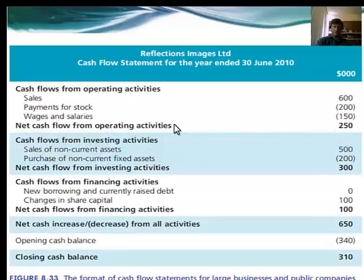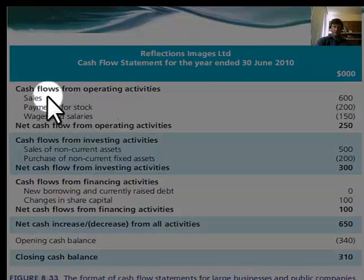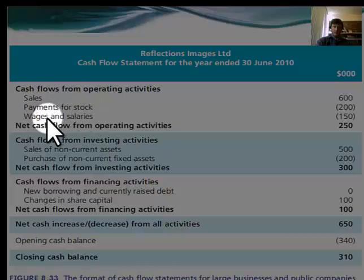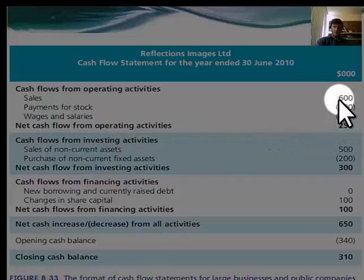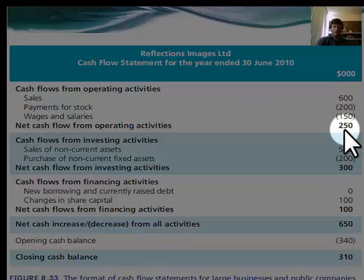Here's one such example. At the top, cash flow from operating activities — that information comes from the income statement. You look at the sales, the payments for stock or inventories, wages and salaries and other costs. A positive $600 comes in, and brackets around numbers is accounting speak for a negative. So a positive is a cash inflow, and a negative is the cash outflow. The net from operating activities is $250 positive.